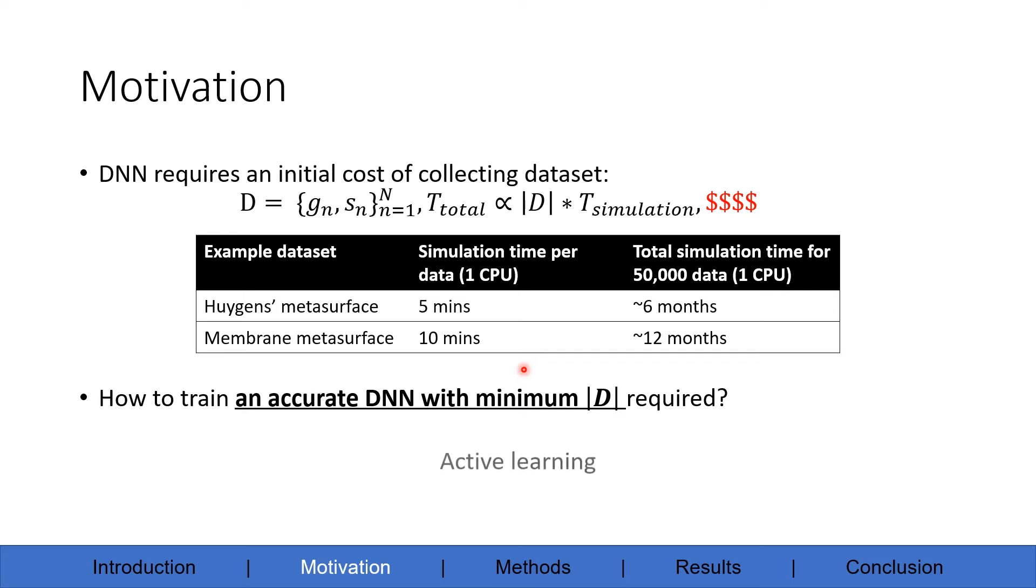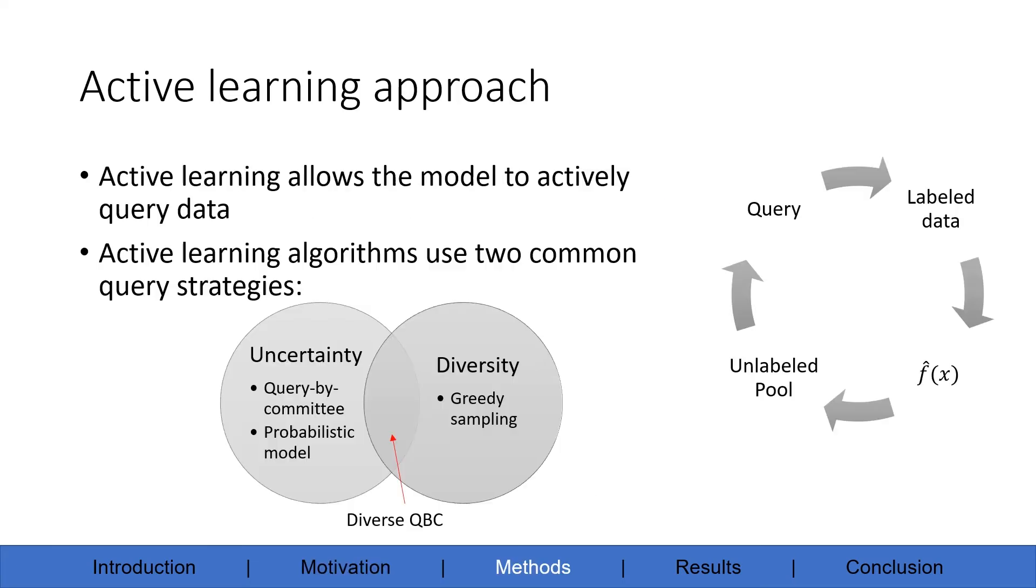Active learning is a special type of machine learning algorithm. It starts with a small pool of labeled data, and the surrogate model is trained on the labeled data. Then the model is allowed to actively query from an unlabeled pool of data to select the most informative data that improves accuracy or reduces loss most significantly.